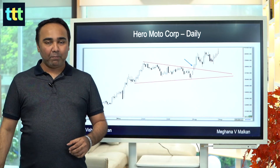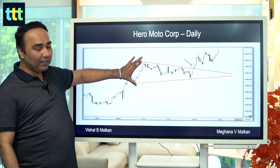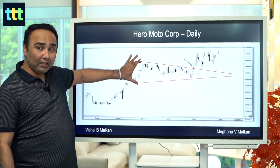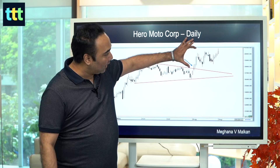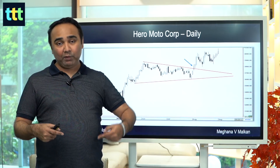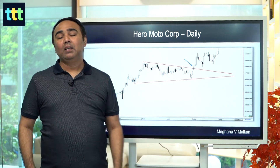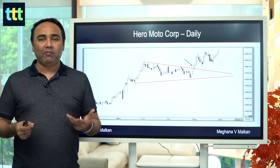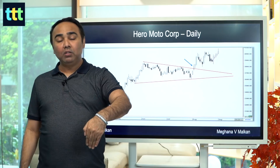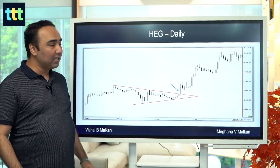Now comes one more important part — what is the target? The target for the triangle is the depth of the triangle. This is the highest depth you can see. If this much is the depth, then that much is the triangle target. So we got the entry, the rules, the points, and the target. We also got the re-entry if it comes back to the support. And what is a failure? Failure means if it goes back into the triangle — if it goes below the trend line, the triangle is out.